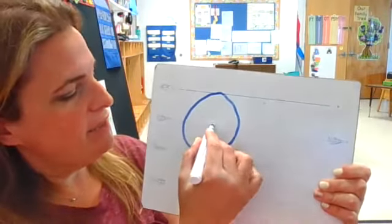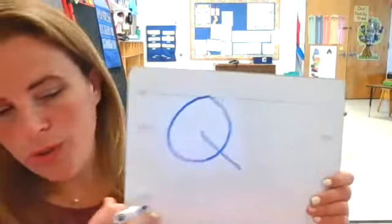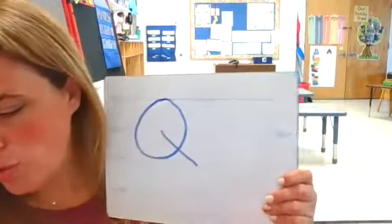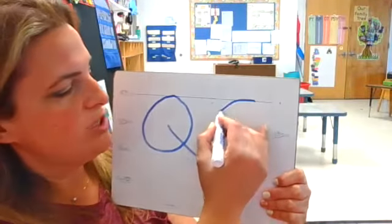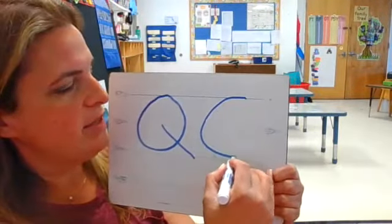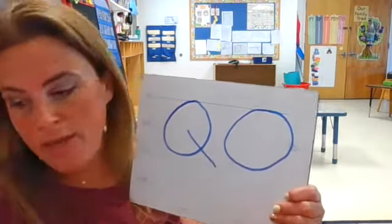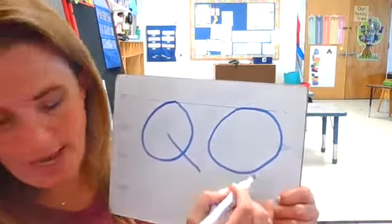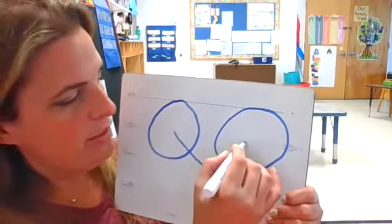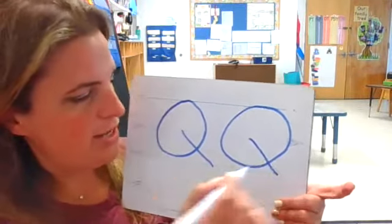Start at the plain line, down to the grass line. Q, Queen, Qua. Start at the skyline, trace backwards down to the grass line, back up to the skyline. Stop. And then make a little tail — start at the skyline and go down to the grass line. Q, Queen, Qua.